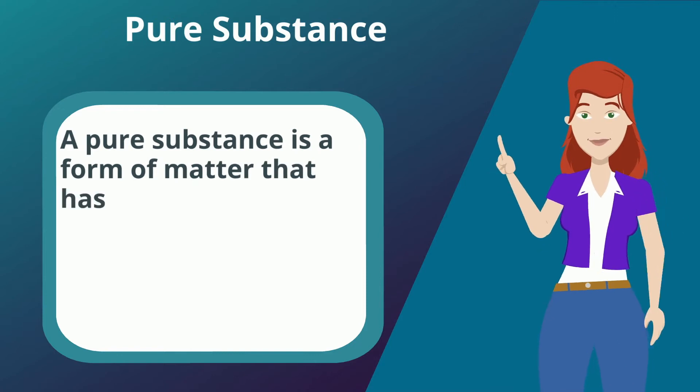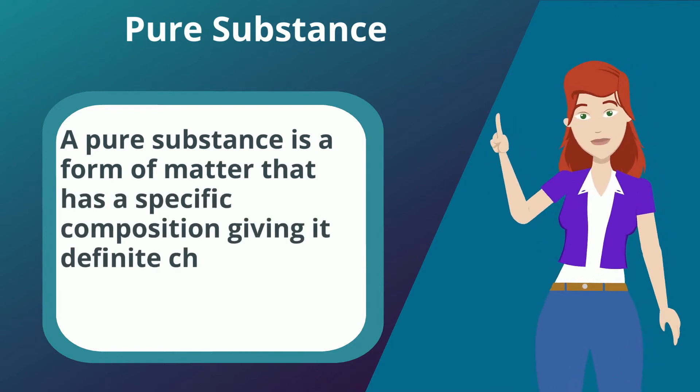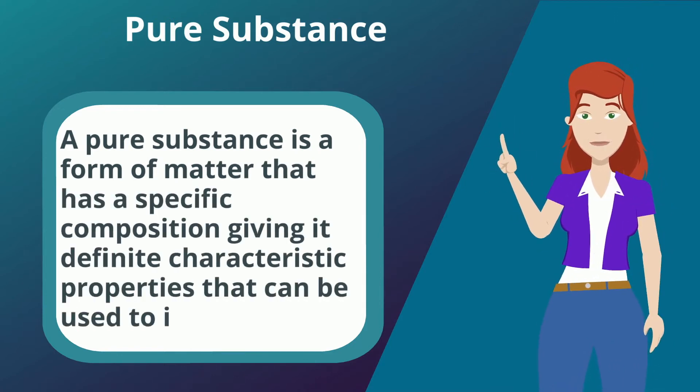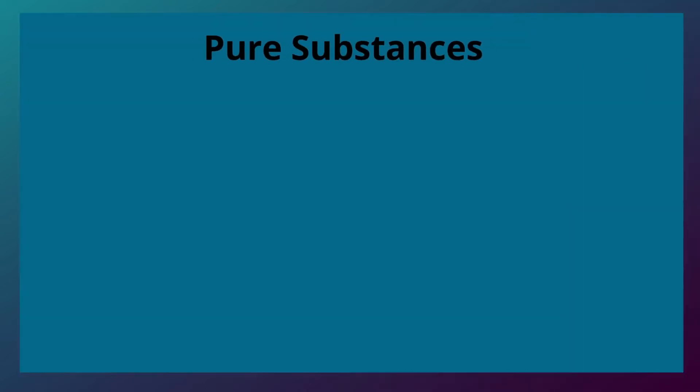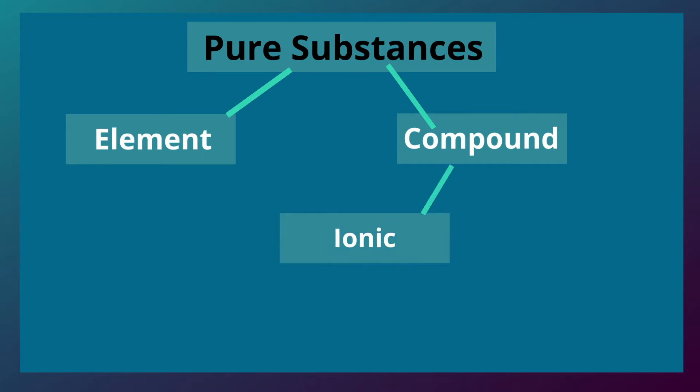A pure substance is a form of matter that has a specific composition giving it definite characteristic properties that can be used to identify it. Pure substances can be elements or compounds, and compounds can be ionic or molecular.